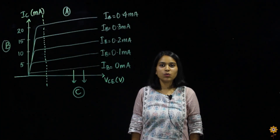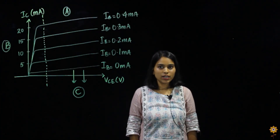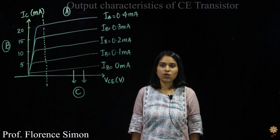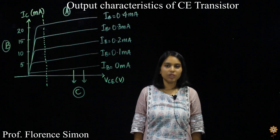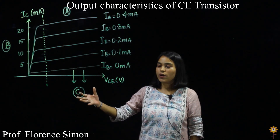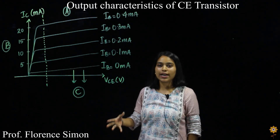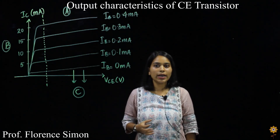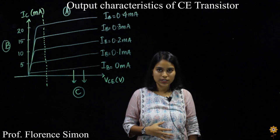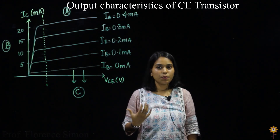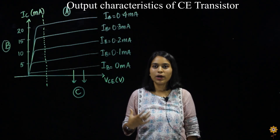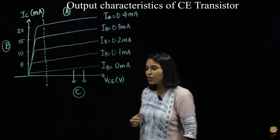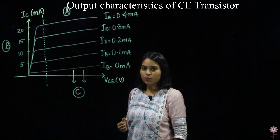Hello everyone and welcome to MES's e-learning channel. In this video we will be seeing the output characteristics of a CE transistor or BJT. Here I have drawn a figure which is the output characteristic of the CE transistor. CE stands for common emitter configuration of transistor. We discussed this in the previous video, so you can check that if you'd like.